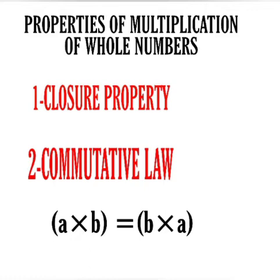Second property: Commutative law. If A and B are any two whole numbers, then A cross B is equal to B cross A. For example, 7 into 5 is equal to 35, and 5 into 7 is also equal to 35.